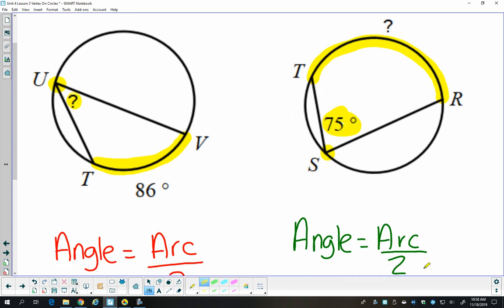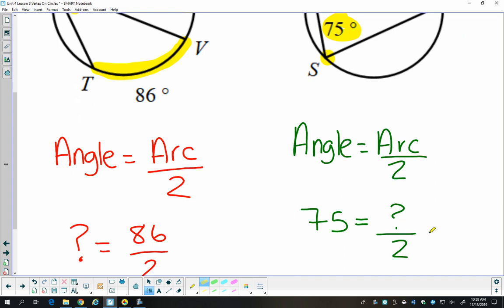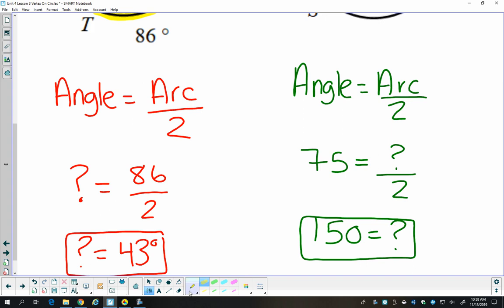So again, I'll write the relationship. And then I'll plug in what I know, 75 for the angle, question mark for the arc. To get rid of that divided by two, I multiply both sides by two to find out the arc is 150 degrees.